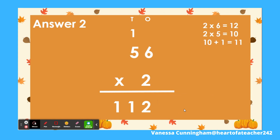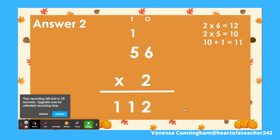Okay, I hope you are ready. We are going to multiply the ones. 2 times 6 equals 12. So that's 12 ones. We are going to regroup the 12 ones into 1 ten and 2 ones. We put the 2 in the ones place below and the 1 in the tens place above. Now it's time to multiply the tens. 2 times 5 equals 10. We cannot forget to add the 1 at the top. So 10 plus 1 equals 11. We put the 1 below in the tens place and the 1 below in the hundreds place.